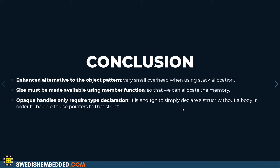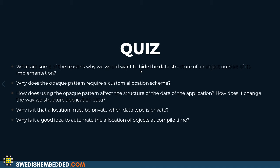We've covered the opaque pattern in this module. I've shown you a way of hiding the implementation of your object, three different ways of allocating objects, how to declare opaque handles, and how to deal with the problem of not knowing the size of the data structure. By now you should be able to use this in your application and know when to use it versus something else.